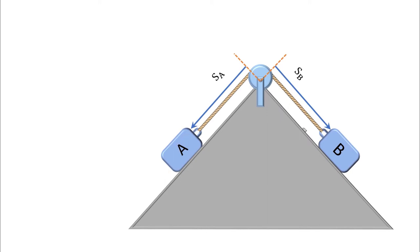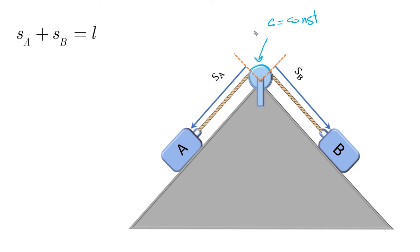First, let's consider the length of the chord and call it L. So sA plus sB plus a constant segment equals L. We don't include that constant segment because it will not contribute to the final relationships of velocity and acceleration.